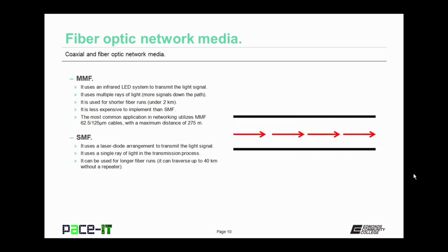Single mode fiber uses a laser diode arrangement to transmit the light signal and sends a single ray of light down the fiber. The advantage of single mode fiber is that it can be used for longer runs — it can traverse up to 40 kilometers without using a repeater.